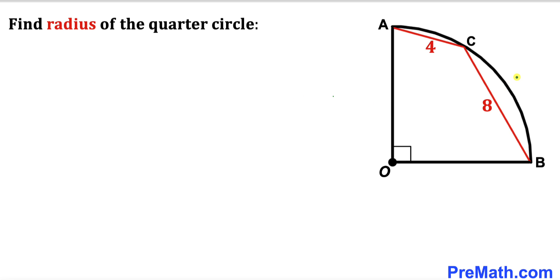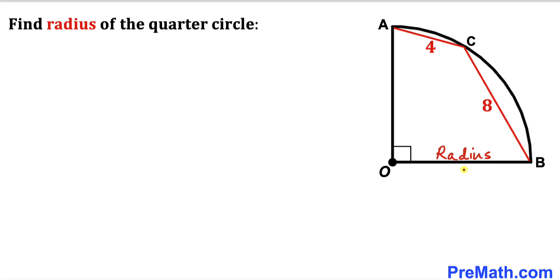In this video we have a quarter circle with center O, such that chord AC is 4 units and chord BC is 8 units. Our task is to calculate the radius of this quarter circle.